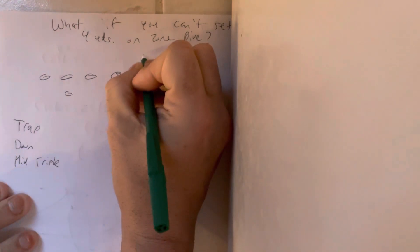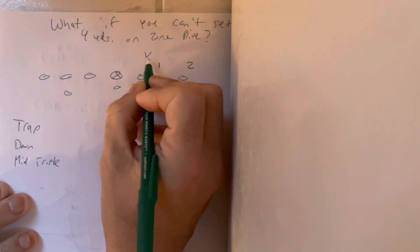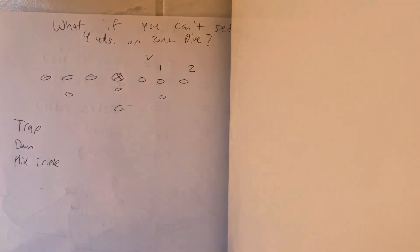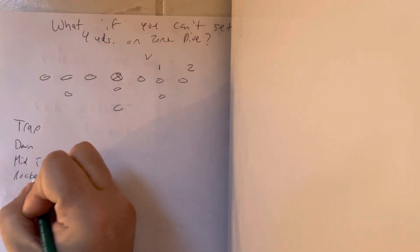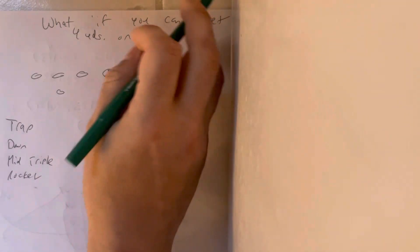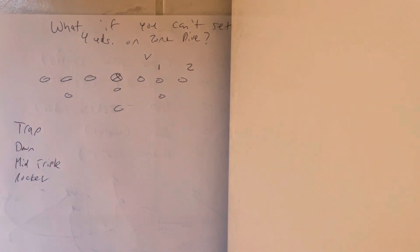Now, if they blitz, you're going to run the rocket. You're going to toss the ball outside because what happens is when they blitz, they don't have anybody to scrape over the top. That's how you beat the blitz.